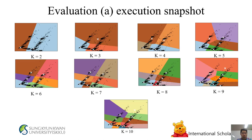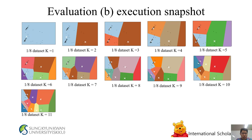Evaluation A: Execution snapshots from K=2 through K=10. K=7 result is the optimal result for this experiment. Evaluation B: Reduced dataset execution snapshots from K=1 through K=11. K=7 result is also the optimal result for the reduced dataset, based on the Silhouette Score, Calinski-Harabasz Index, and Davies-Bouldin Index.